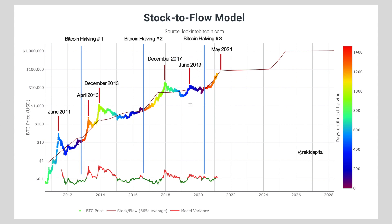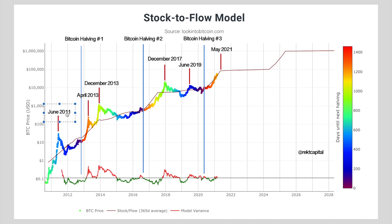There are six upside deviations, though the sixth hasn't materialized yet. Historically focusing on the five we've seen, we saw a deviation to mark a bull market top in June, April, December, December, and June. The June 2019 upside deviation isn't considered a valid one because stock to flow denotes scarcity after the halving — in June 2019 we hadn't yet seen a shift in the Bitcoin protocol cutting the amount of Bitcoin created every 10 minutes in half, so that scarcity wasn't apparent.